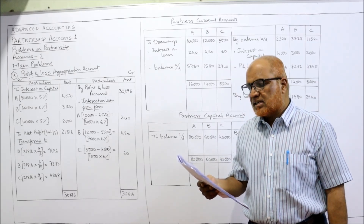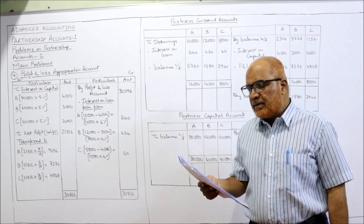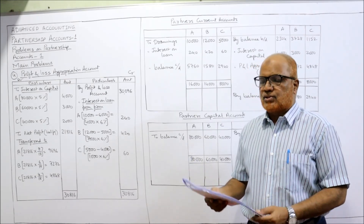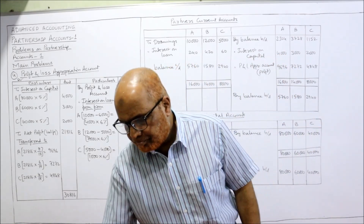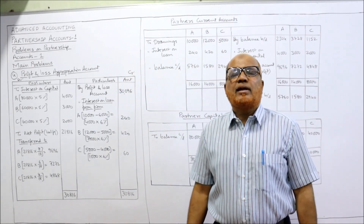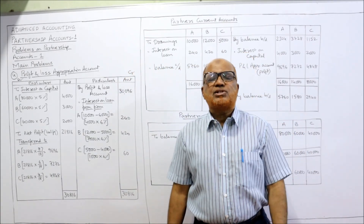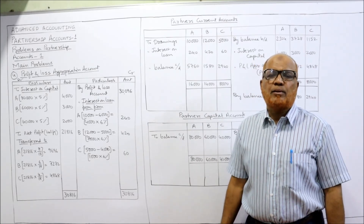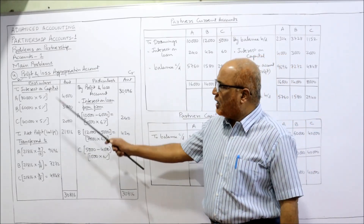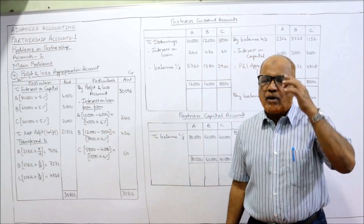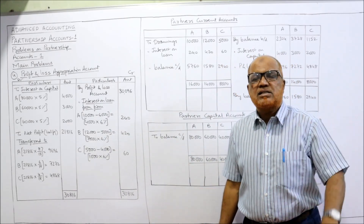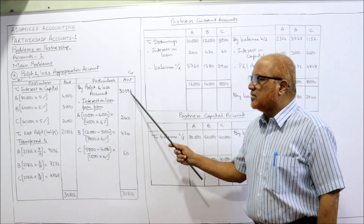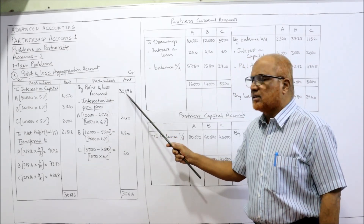The profits for the year were 30,096 before making any adjustments for interest. We are required to draw up the capital and current accounts of the partners. Before preparing these accounts, we need to find the distributable profit, so we must make the profit and loss appropriation account. The profit before adjustments — 30,096 — is credited by the profit and loss account.